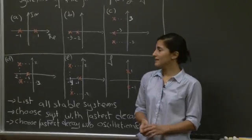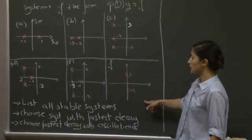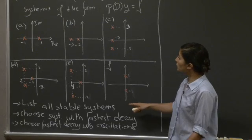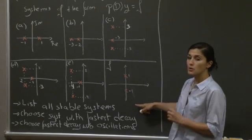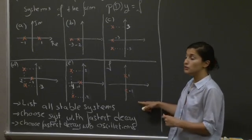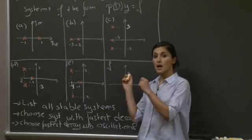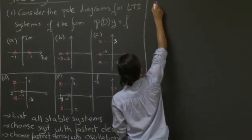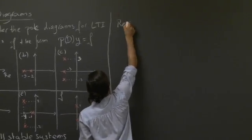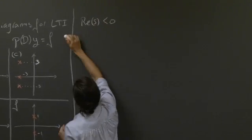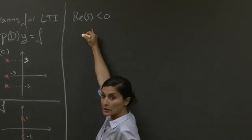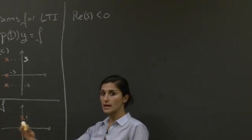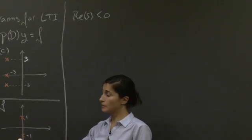Welcome back. The first question asks us to list all the stable systems. If you recall, the stable systems are the ones for which the real part of all poles are negative. If we have all poles with negative real part, we have a stable system for which the solution, after a long time, would decay — it would be transient.